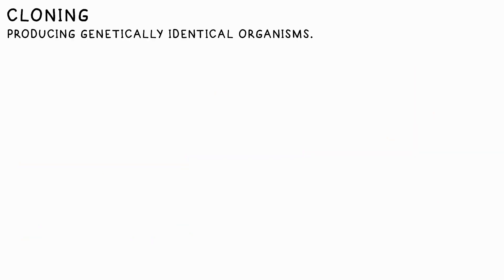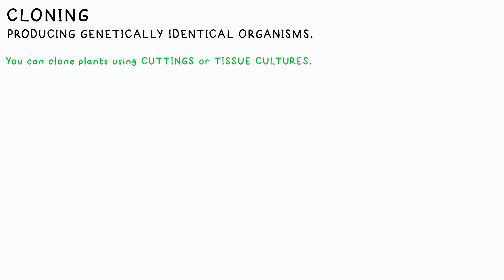Making exact copies of plants is easy — just take cuttings off a plant and put them in the ground. You can also clone from a tissue culture, which can be helpful for preserving some species from going extinct.